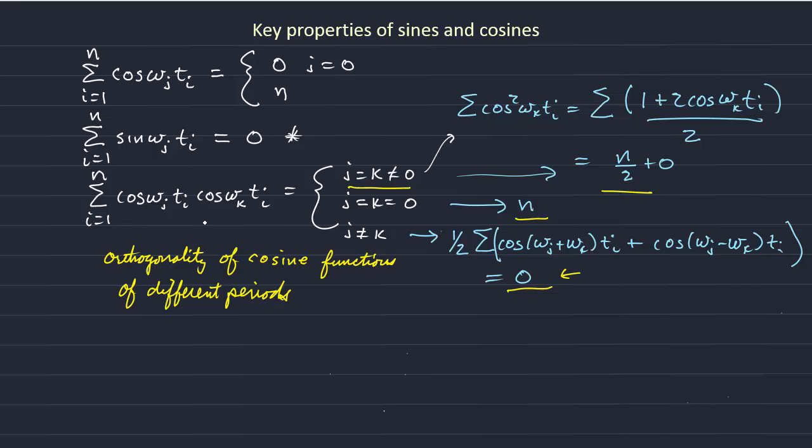If we take a dot product between two vectors and we get 0, that means the two vectors are orthogonal to each other. Two cosine functions that have different frequencies are orthogonal to each other. Only when we have two cosine functions of the same frequencies and multiply and sum, or take the dot product of those two vectors, do we get something non-zero.